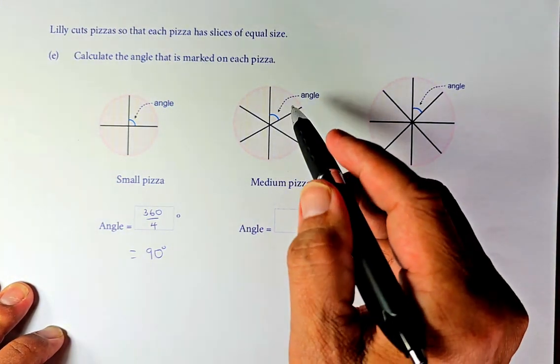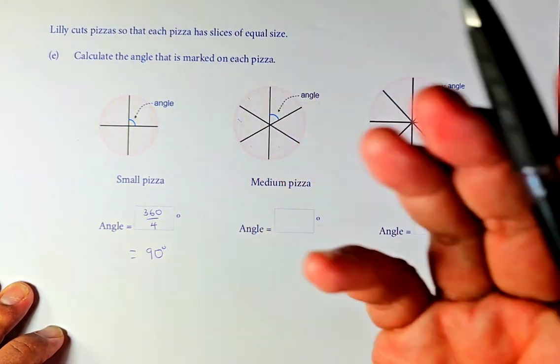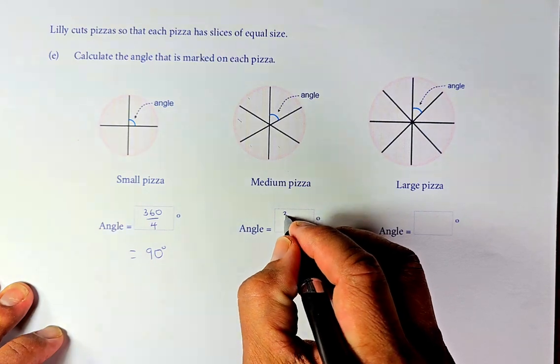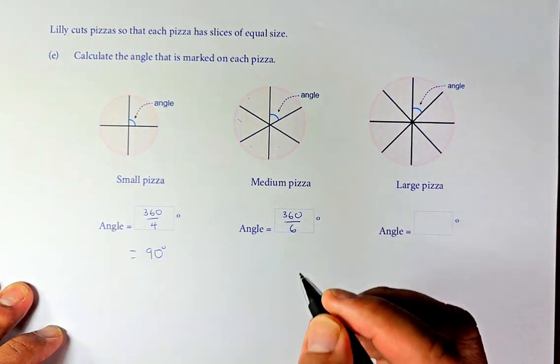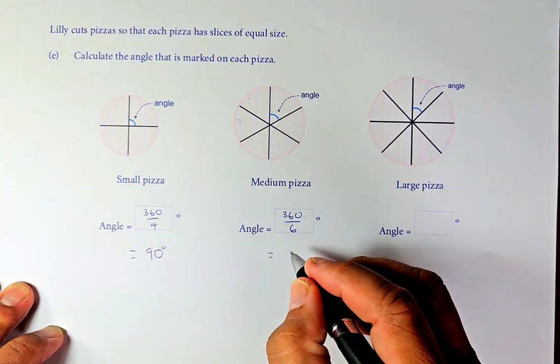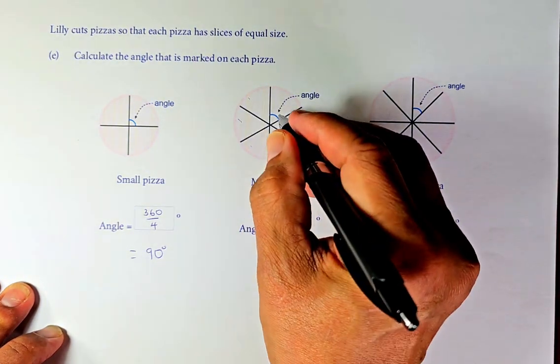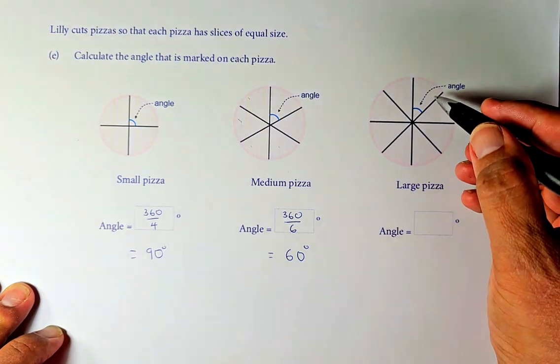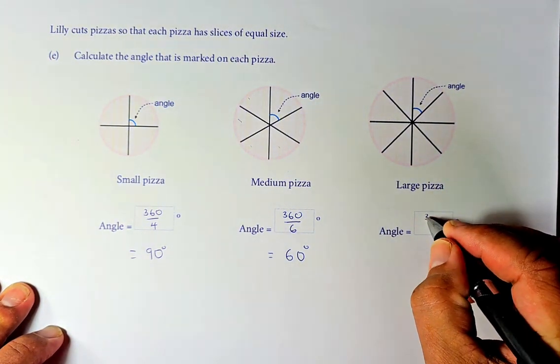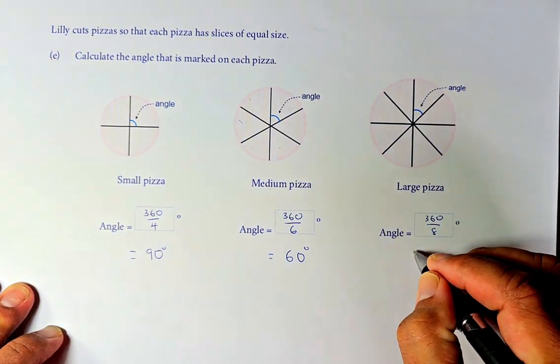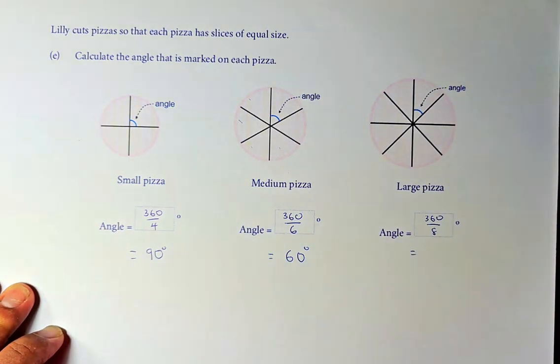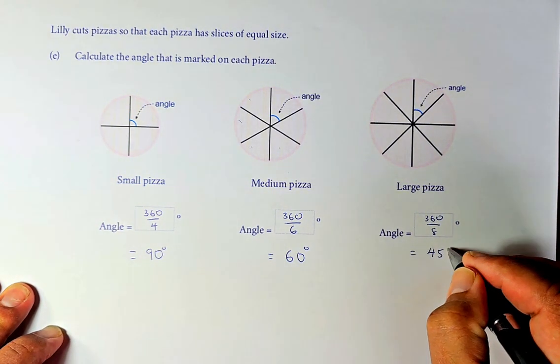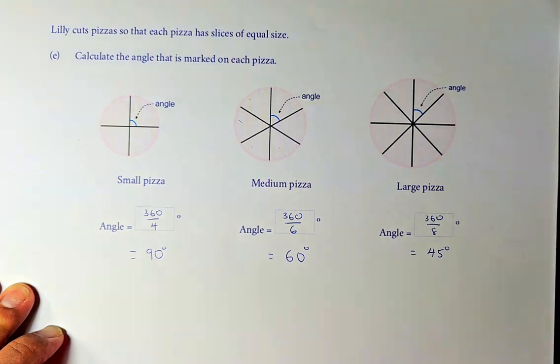The second pizza, we have 6 pizzas: 1, 2, 3, 4, 5, 6. Again, it's going to be the same thing. We take 360 divided by 6. If you are good in calculation, you don't need a calculator. 360 divided by 6, each angle here is going to be 60 degrees. And last but not least, if you are dividing it into 8, it's going to be 360 divided by 8. If you know your calculation well, you don't need a calculator. And the answer is going to be 45 degrees. And that is outcome number 1.